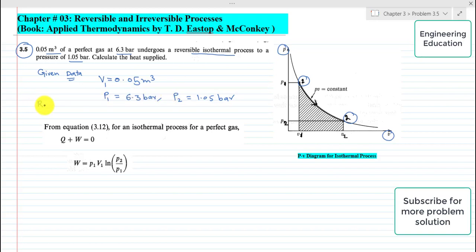We are required to find the heat supplied Q. Starting the solution, we know that for an isothermal process for a perfect gas, when T₁ equals T₂, the internal energy at state 1 and state 2 will also be equal to each other, meaning that U₁ will be equal to U₂.